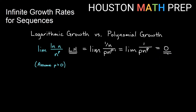Now what this tells us: because this limit is zero, the bottom of this fraction becomes infinitely large at a much faster rate than the top. So polynomial growth n^p grows much, much more quickly than the natural log of n. We're going to say — using a double greater-than — that polynomial growth is much faster than logarithmic growth.